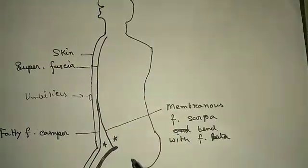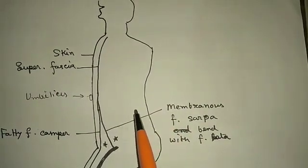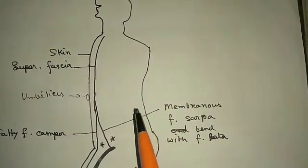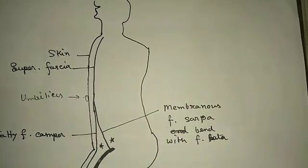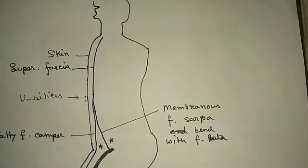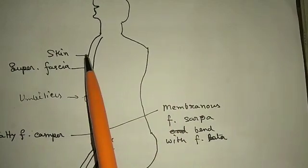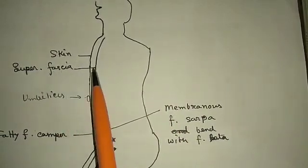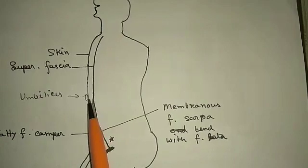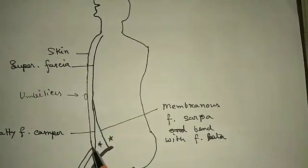This is also a sagittal section but not mid-sagittal - it is more lateral. This section includes the thigh, not the perineum. This is skin; under the skin is a single layer of superficial fascia. But below the umbilicus, it is converted into two layers.